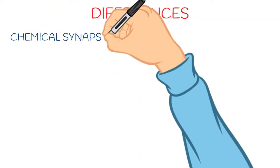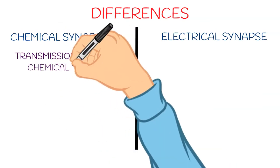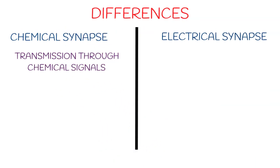Now let's see some major differences between chemical and electrical synapses. In chemical synapse, transmission occurs through chemical signals, while in electrical synapse it's through electrical signals.